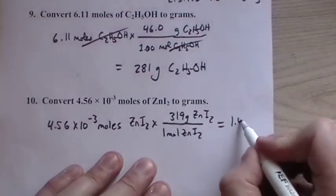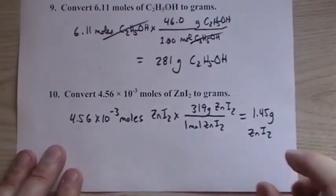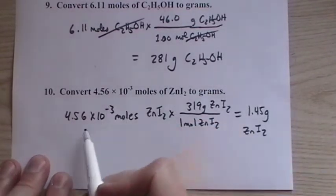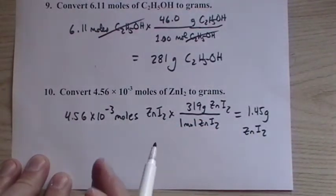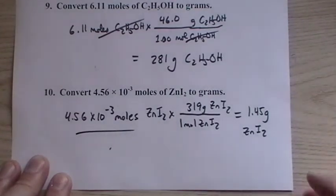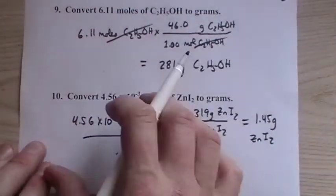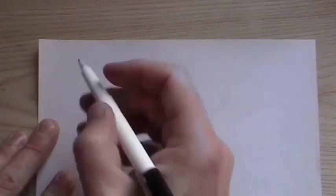So we have 4.56 times 10 to the minus 3 moles of zinc iodide ZnI2. I did this one just so we have a number that's not always a nice simple number - here we have scientific notation and we convert to grams. Let me really quickly do one more.